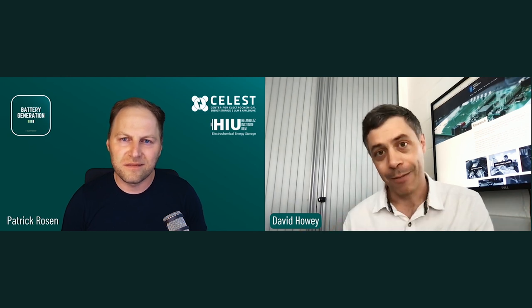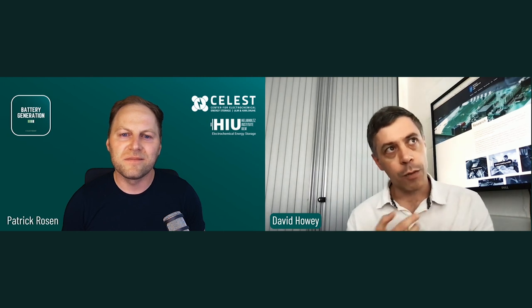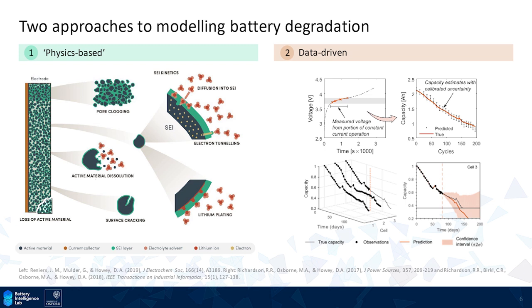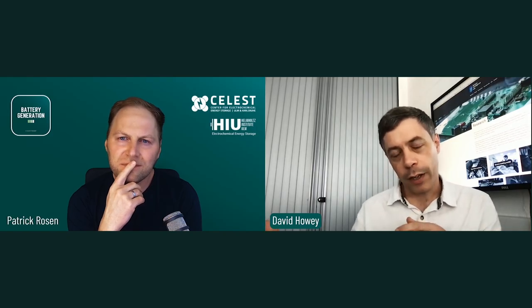There are two main scenarios where modeling helps. The first is improving design — we want to understand how to build batteries that last for the right amount of time, neither over- nor under-engineered. With models, we can predict for a given usage cycle what a given battery type will do in terms of lifetime, helping you choose the right kind of cell when building a new battery system.